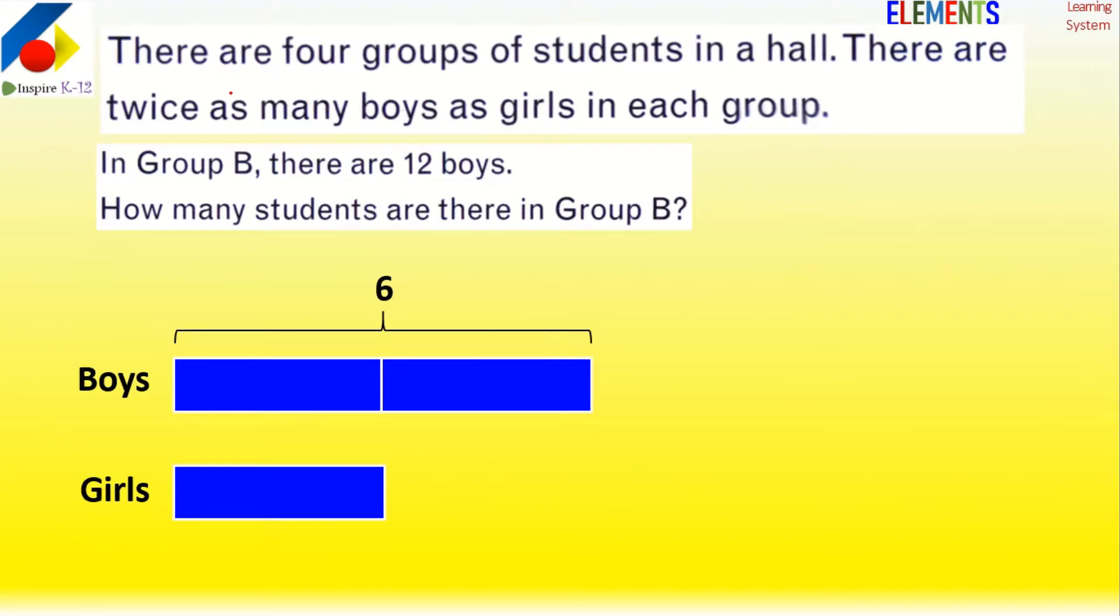No - there are twice as many boys as girls, right? So here 12 boys are here, so girls are half. Total, how many girls are there? You can see 6. So these are 6 girls and 12 boys. So easy.